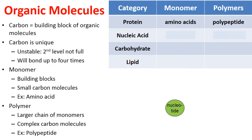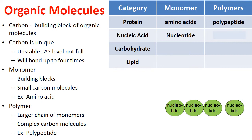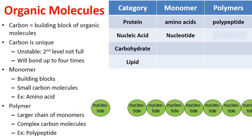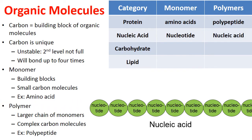Nucleic acids are made from a building block called a nucleotide. When a bunch of nucleotides bond together, this long chain of nucleotides makes up the polymer called a nucleic acid.